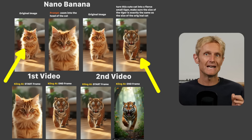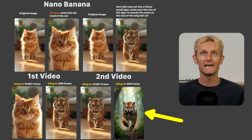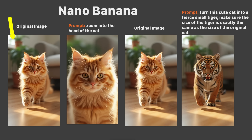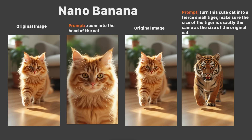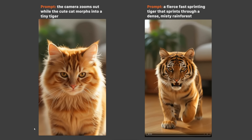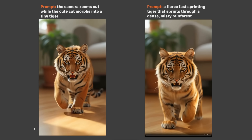For the next shot, I wanted the cat to turn into a tiny tiger, which then grows into a big tiger running into the wild. So I decided to make two videos and stitch them together. In Nano Banana, I used a cat image as the original, used the prompt 'zoom into the head of the cat,' then used the prompt 'turn this cute cat into a fierce small tiger — make sure the size of the tiger is exactly the same as the size of the original cat.' You can see the tiger is very small because the couch is very big, and I really love that. Then in Kling AI, I set up start and end frames for both videos, and for the prompt used 'the cute cat morphs into a tiny tiger.'